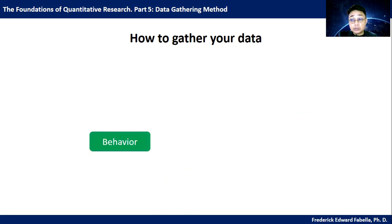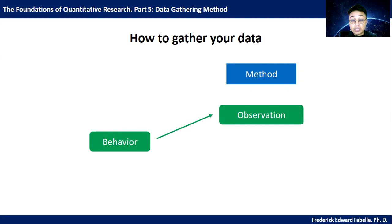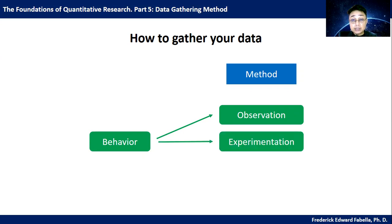Let's now proceed to behavior. How will you get information about behavior? If you cannot simulate the behavior that you want to study, you may need to go to the natural setting where the behavior is occurring and observe the behavior there. Or if you can simulate the situation where the behavior might occur, you can conduct an experiment, probably in a laboratory. That's how you gain information about behavior.